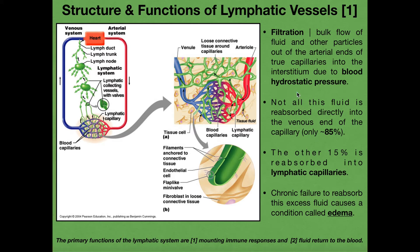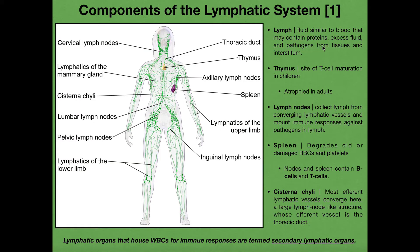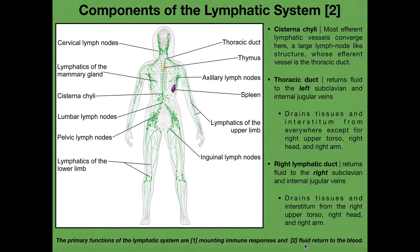We'll talk more about how these capillaries eventually form vessels in a future video. For now, understand that the fluid reabsorbed into the lymphatic vessels ultimately has to make its way back into the venous system. They travel up the lymphatic vessels, encounter structures called lymph nodes, and ultimately get that fluid back into the venous system. So one major function of the lymphatic system is fluid return to the blood — fluid that gets filtered but not reabsorbed by the capillaries.